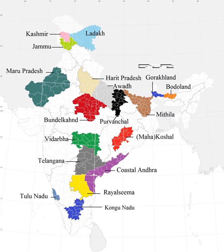Goa's northern exclaves of Daman and Diu became a separate union territory. Three new states were created in November 2000: Chhattisgarh was created out of eastern Madhya Pradesh; Uttaranchal, which was later renamed Uttarakhand, was created out of the mountainous districts of northwest Uttar Pradesh; and Jharkhand was created out of the southern districts of Bihar. On 2 June 2014, Telangana was separated from Andhra Pradesh as the 29th state of the union.